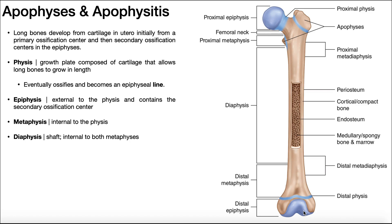Now let's go over some relevant anatomy. The epiphyses are the proximal and distal terminal ends of the long bone. In dark blue, the proximal epiphysis — for the femur, that would be the femoral head. And down here is the distal epiphysis, the part of the femur that articulates at the knee joint with the tibia. Then we have the physis, which is directly internal to the epiphyses — it's really just a fancy term for a cartilage growth plate that allows the bone to grow in length.